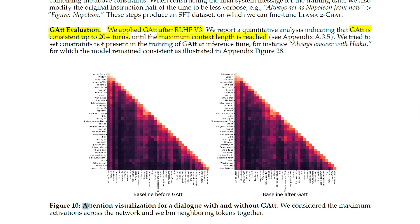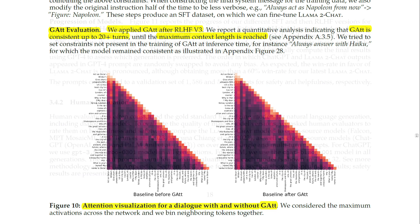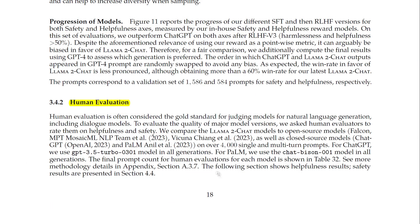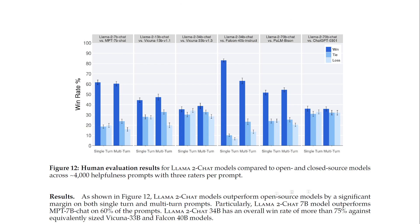Human evaluation is often considered the gold standard for judging models for language learning, including dialogue models. To evaluate the quality of major model versions, the authors asked human evaluators to rate them on helpfulness and safety, comparing the LLAMA2 Chat models to open source models Falcon, MPT, and others on over 4,000 single and multi-turn prompts. LLAMA2 Chat models outperform open source models by a significant margin on both single-turn and multi-turn prompts.